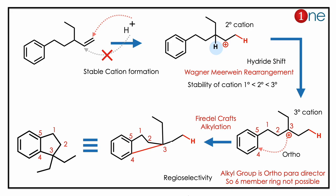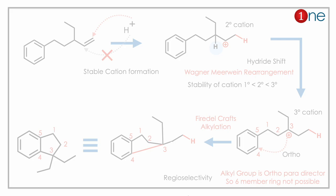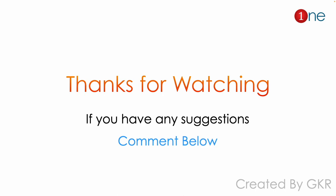The result is a fused five-membered and six-membered ring product with two ethyl side chains. The key concept to learn here is that regioselectivity can dictate the ring size. That's all from this video — thanks for watching.